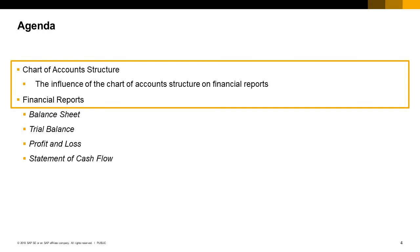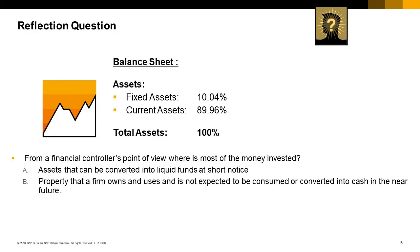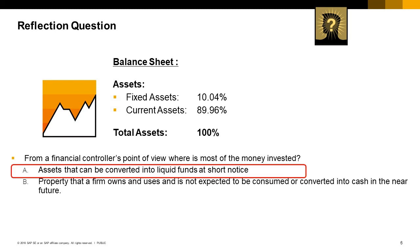We start by talking about the strong connection between the chart of accounts structure and the different financial reports. At the end of the year you issue the balance sheet report, presented in a summarized form. For the assets drawer, from a financial controller's point of view, where is most of the money invested — in assets convertible to liquid funds at short notice, or property not expected to be converted to cash soon? Fixed assets represents property the firm owns; current assets represents liquid assets. The current assets holds almost 90% of total assets, so that is the correct answer.